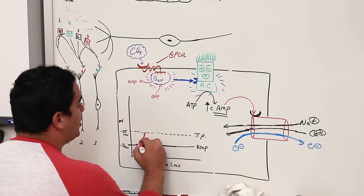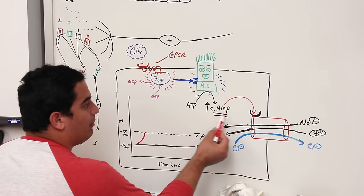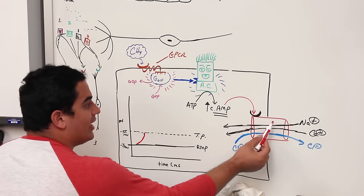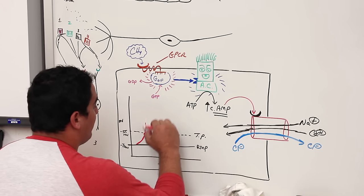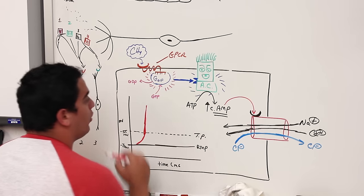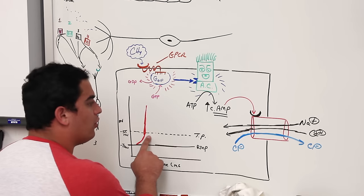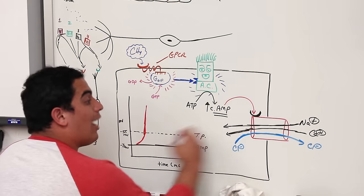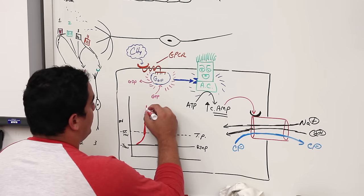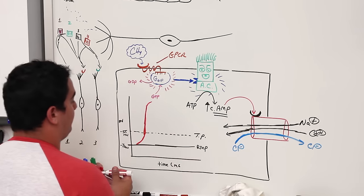If cyclic AMP is acting on these channels — positive ions flowing in, negative ions leaving — this cell will reach threshold very quickly. Once it reaches that threshold point, it will activate and generate a very powerful action potential down the axon.